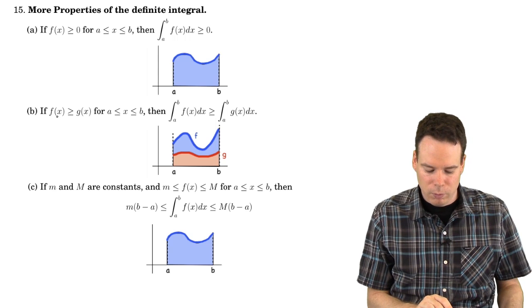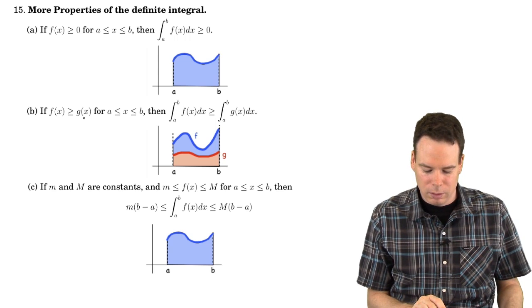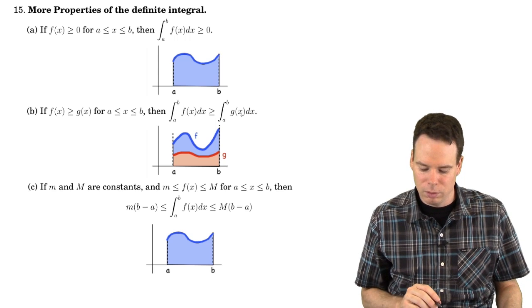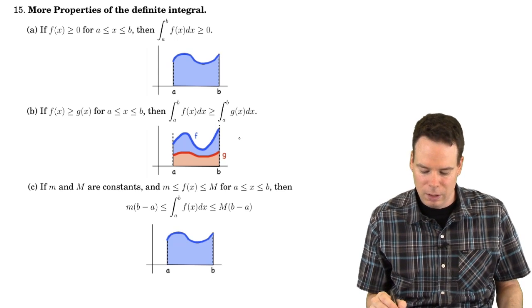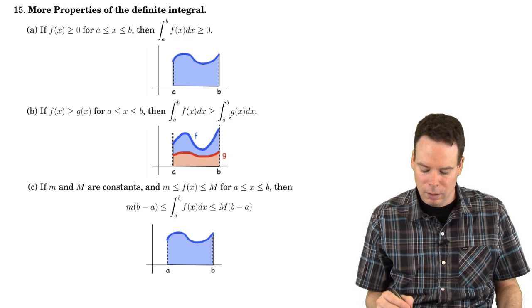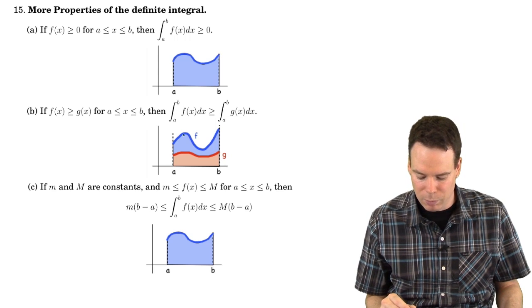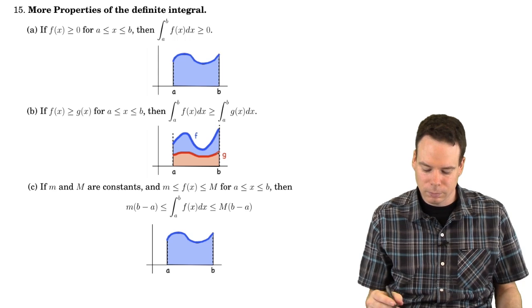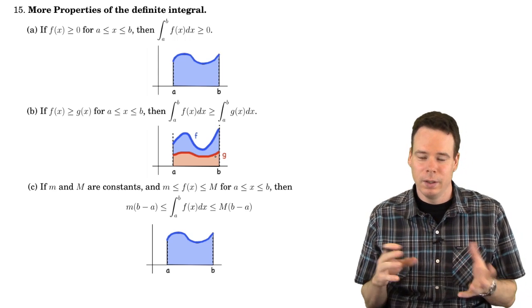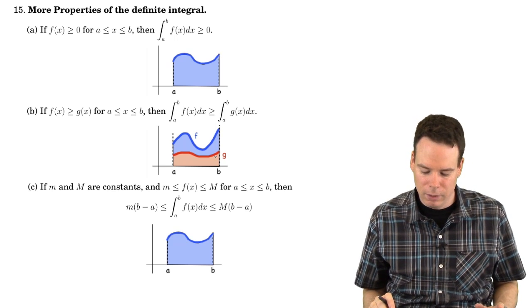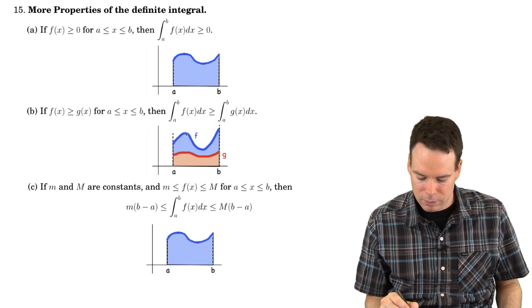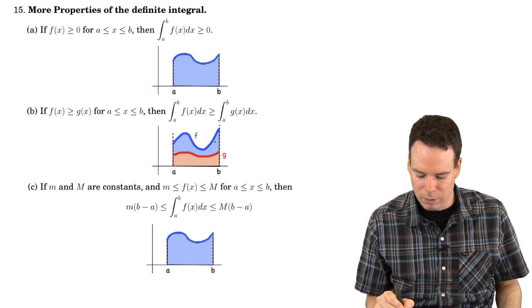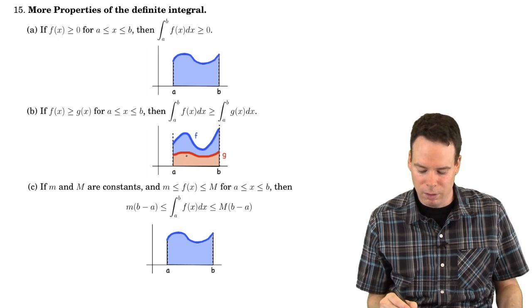What about if you have one function sitting above another one on the entire interval that you're integrating over? What can you say about their integrals? Well, if f is bigger than g, then the integral of f is bigger than the integral of g. Here's a picture which represents a situation where both f and g are positive. You can have similar pictures where they can be negative, but the idea is that the function f should have a bigger area than the area under the function g.